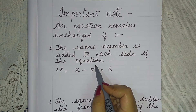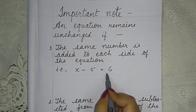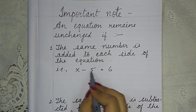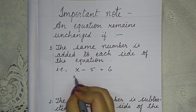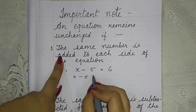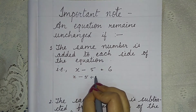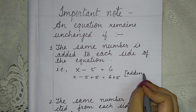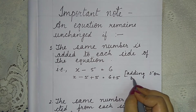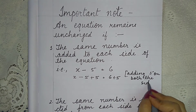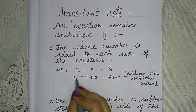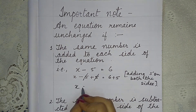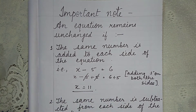When the same number is added to both sides, the equation remains balanced. For example, if x minus 5 equals 6, we add plus 5 to both sides: x minus 5 plus 5 equals 6 plus 5. The plus 5 and minus 5 cancel to zero, leaving x equal to 11.